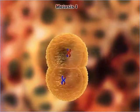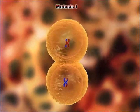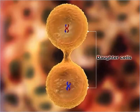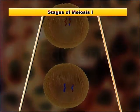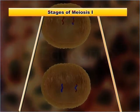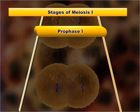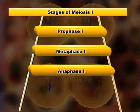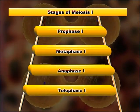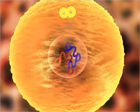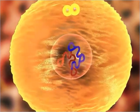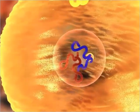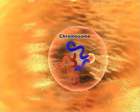Meiosis one is the reductional division in which the chromosome number gets halved and distributed between two daughter cells. Meiosis one includes four stages: prophase one, metaphase one, anaphase one, and telophase one.